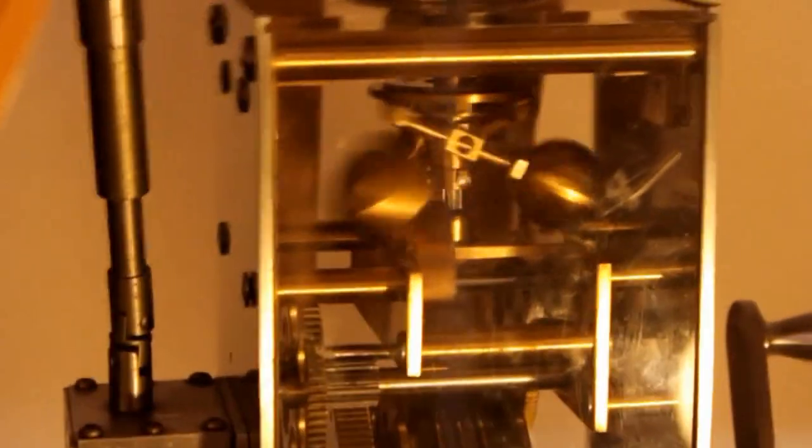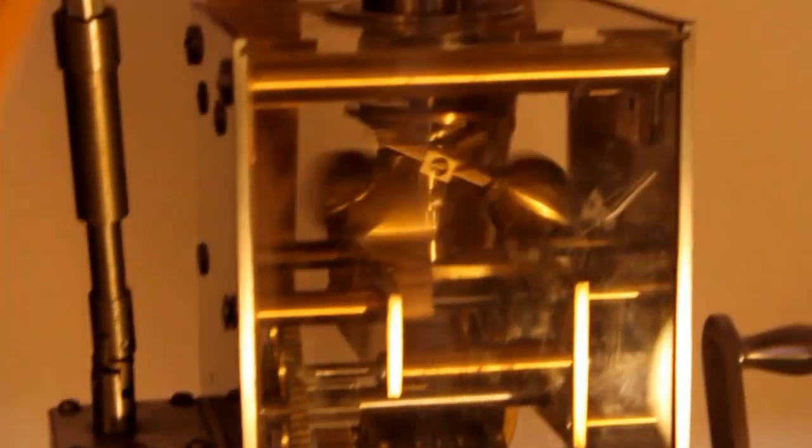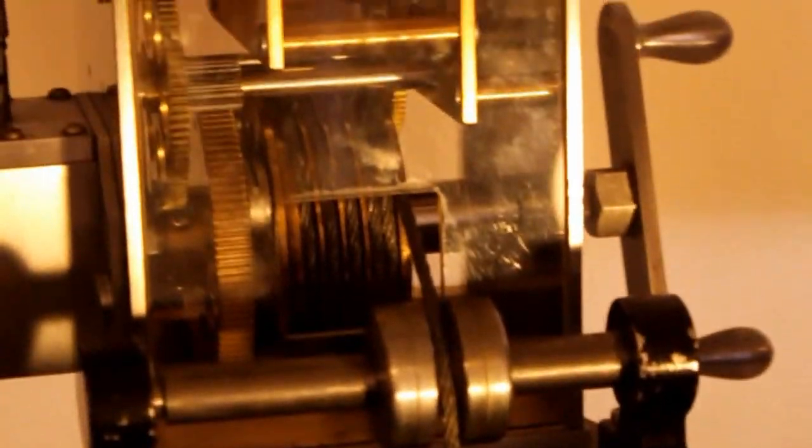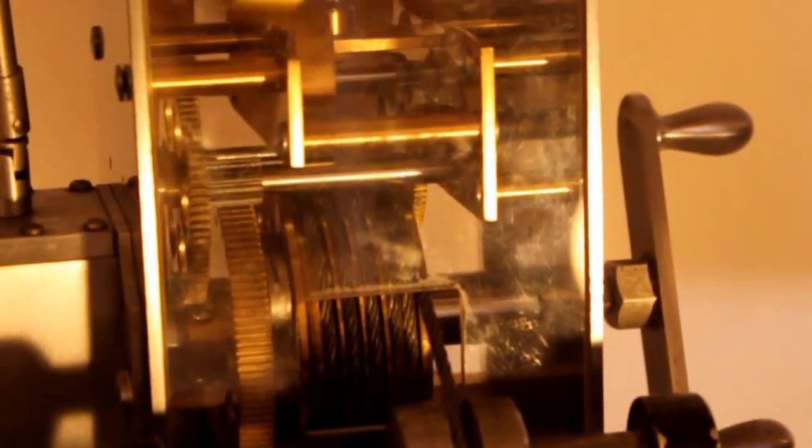You can see the governor going around, that's a three-ball governor, and in a minute here I'll stop it so you can see what's going on there. There's a large drum, and the weight is pulling on a cable that causes that drum to have a good deal of tension on it. And of course the governor simply slows it down, slows down the falling of the weight.